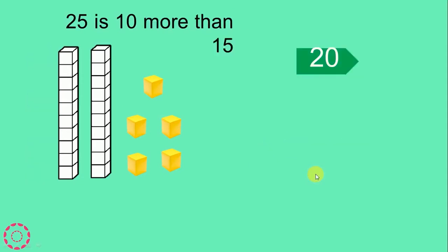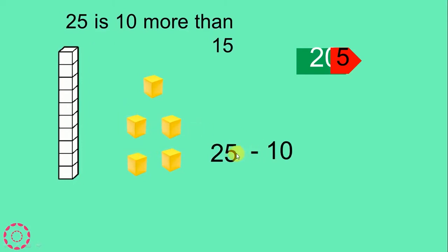25 is 10 more than 15. Let's check: 10, 20, then 1, 2, 3, 4, 5 — we have 25. 25 subtract 10: 5 subtract 0 equals 5, 2 subtract 1 equals 1. We have 15. 25 subtract 10 equals 15.